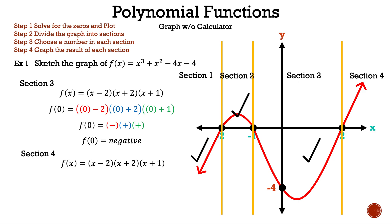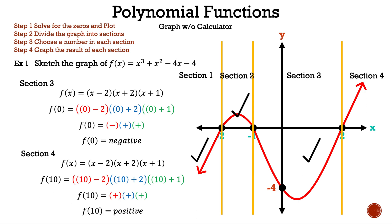Finally, for section 4, we chose 10: (10 - 2) is positive, (10 + 2) is positive, (10 + 1) is positive. Positive times positive times positive gives a positive result — section 4 is above the x-axis. We matched the graph using the charts, so we can choose whatever method we prefer. That is example 1.